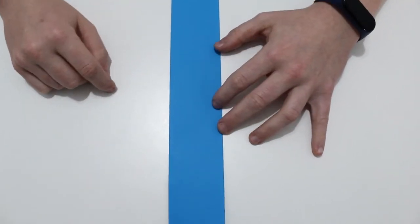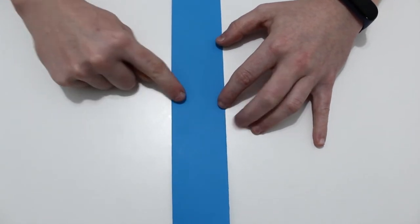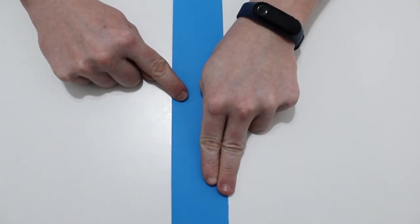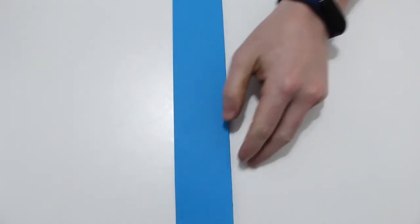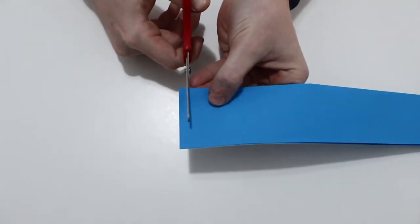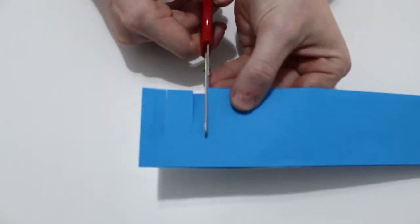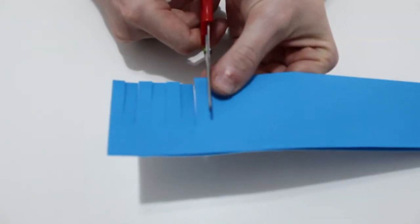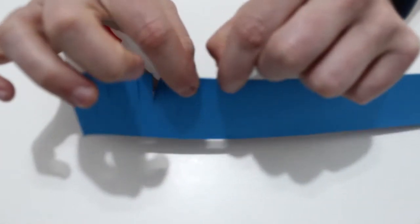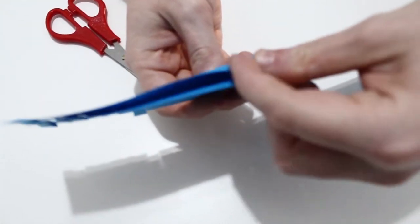Ahora vamos a ir haciéndole cortecitos desde el principio hasta el final, pero sin que el corte llegue a este lado, dejando más o menos dos deditos o un poquito menos. Acordaros que el corte se hace en el lado que está doblado.